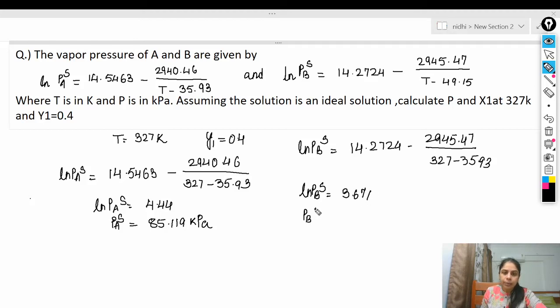And then P_B^s is 39.29 kilopascal. Now we have P_A^s and P_B^s, and Y1 is given. So Y1 is 0.4, so what will Y2 be? We know that for binary solution Y1 + Y2 = 1, so if Y1 is 0.4 then Y2 will be 0.6. Now we can find out the total pressure by using the equation which we have already discussed.